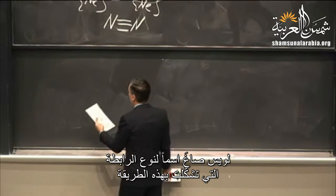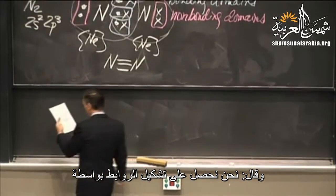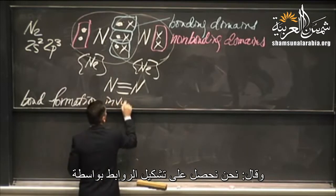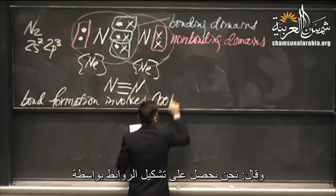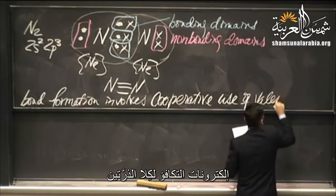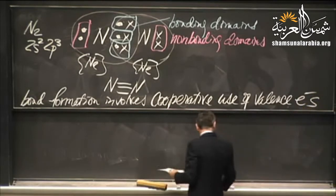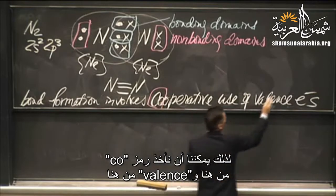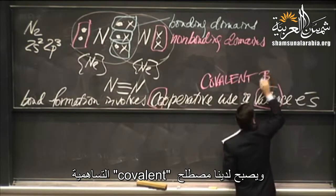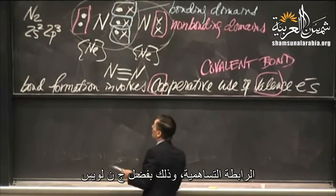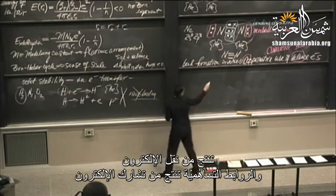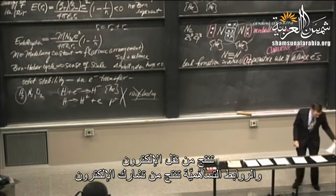Lewis coined a name for this type of bond. Bond formation involves the cooperative use of valence electrons — we take 'co' from cooperative and 'valence' to get the term covalent bond. So to be very clear: an ionic bond results from electron transfer, and a covalent bond results from electron sharing. Now let's go to heteronuclear molecules.